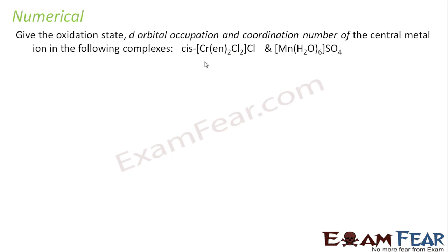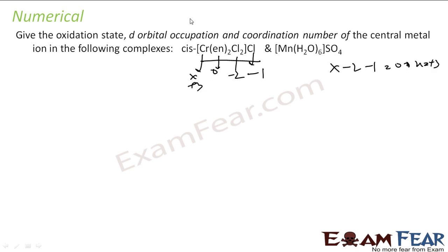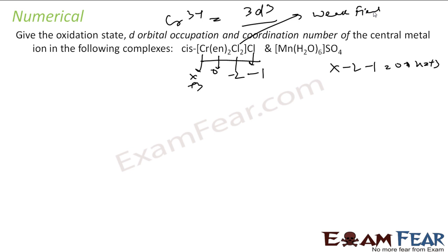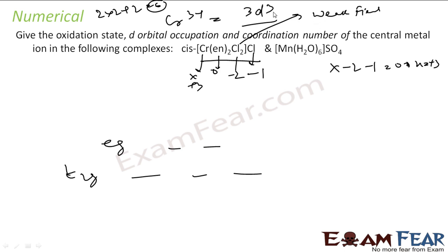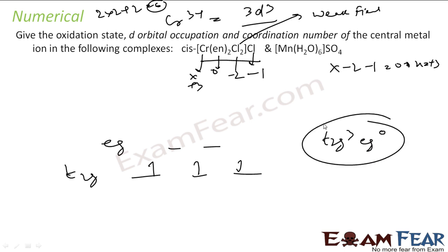For [Cr(en)Cl₂]: Cl is −1 each (×2 = −2), en is 0, so x − 2 = 0 giving oxidation state of Cr = +3. Cr³⁺ is 3d³. Coordination number: en is bidentate (2×2 = 4) plus 2 Cl = 6, so octahedral. Cl⁻ is a weak field ligand, no forced pairing. Filling 3 electrons: t₂g³, eg⁰. Electronic configuration is t₂g³ eg⁰.